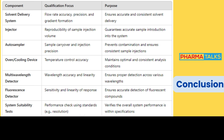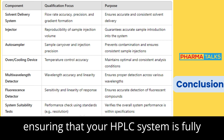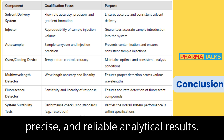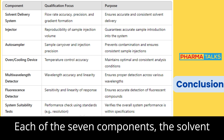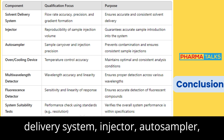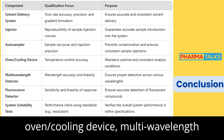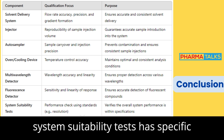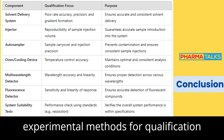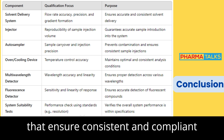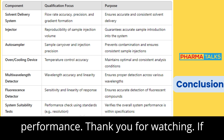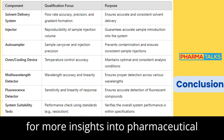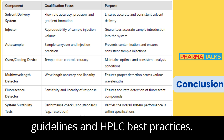In conclusion, ensuring that your HPLC system is fully qualified based on EDQM guidelines is crucial for maintaining accurate, precise, and reliable analytical results. Each of the seven components—the solvent delivery system, injector, auto-sampler, oven/cooling device, multi-wavelength detector, fluorescence detector, and system suitability tests—has specific experimental methods for qualification that ensure consistent and compliant performance. Thank you for watching. If you found this video helpful, don't forget to like, subscribe, and stay tuned for more insights into pharmaceutical guidelines and HPLC best practices.